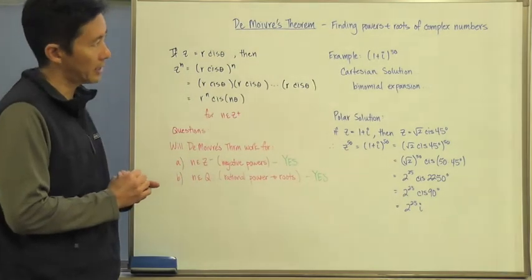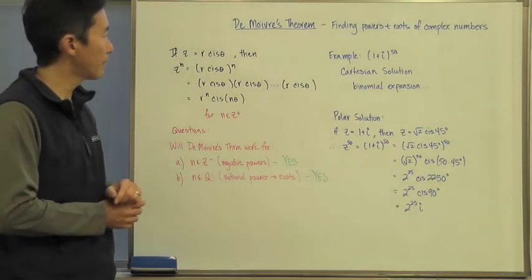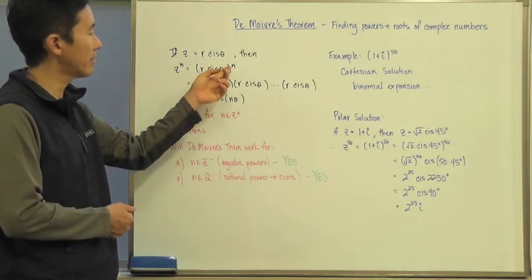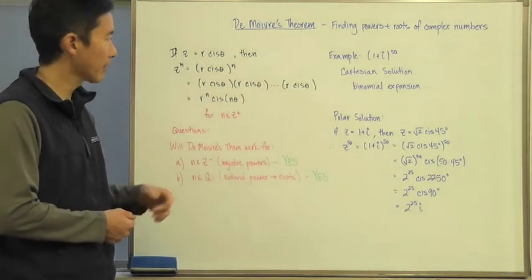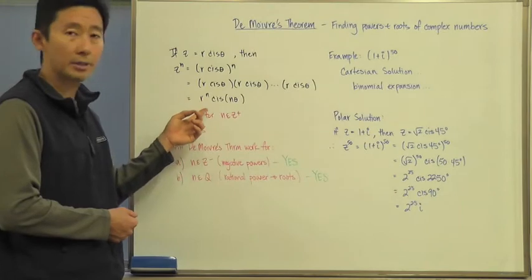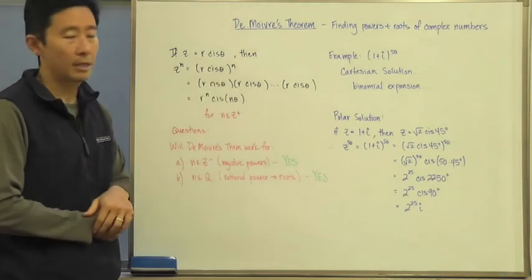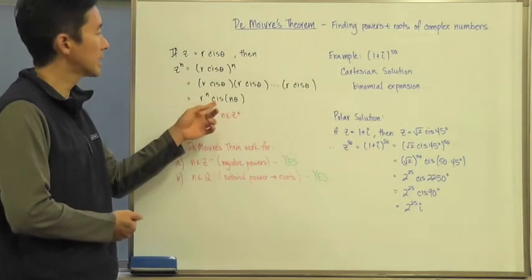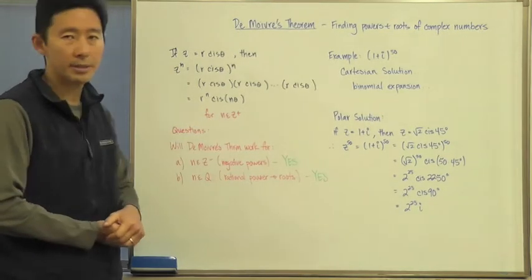Now we've already talked a little bit about finding powers of complex numbers because we said that if z equals r cis theta, then if we raise that to a particular power, then we can say that this is r cis theta raised to the n power, which means n factors of r cis theta. Therefore we have n r factors, which results in r to the n. And since we also have n factors of cis theta, we can use our property of multiplication of complex numbers in polar forms to say that the argument would just be n theta. Now this is going to be true for all n being a positive integer.